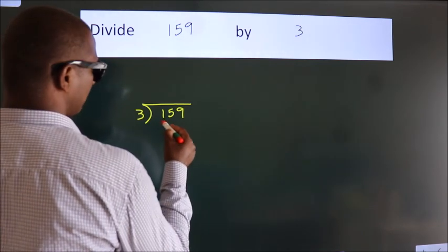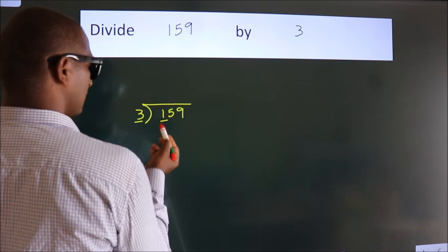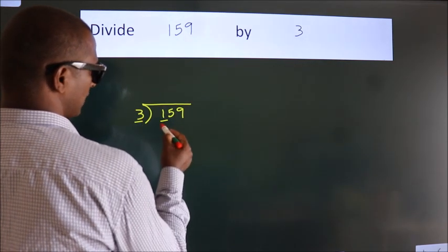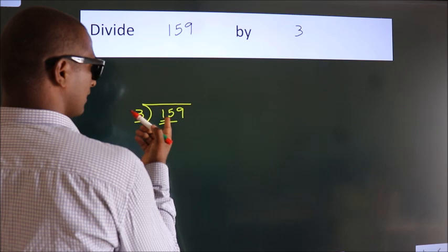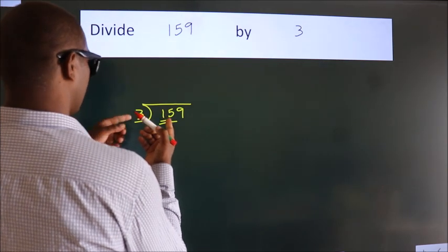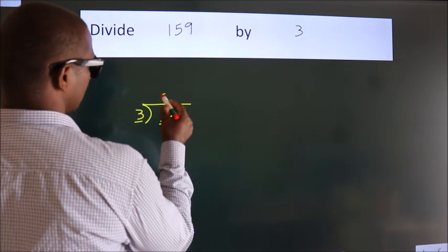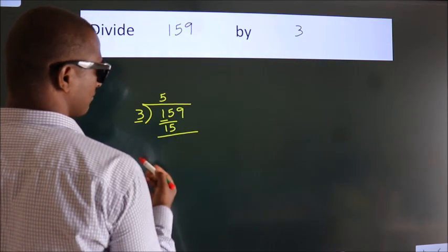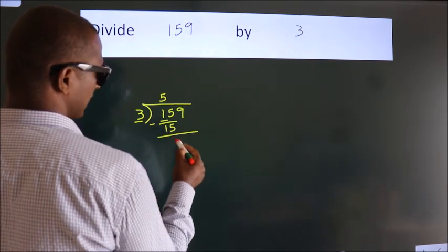Here we have 1. Here 3. 1 smaller than 3. So we should take 2 numbers. 15. When do we get 15? In 3 table. 3 fives. 15. Now we should subtract. We get 0.